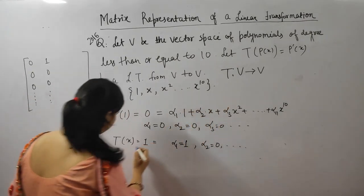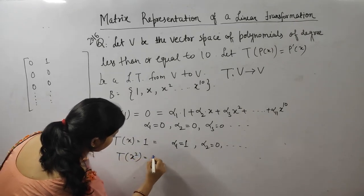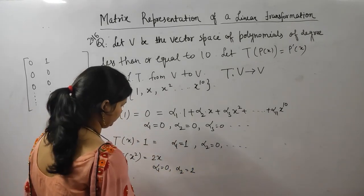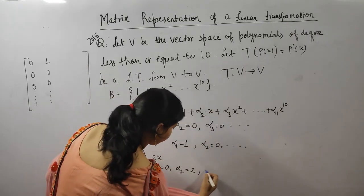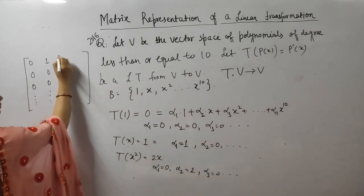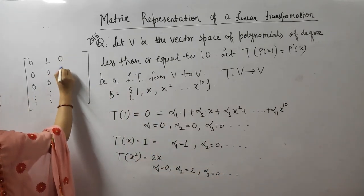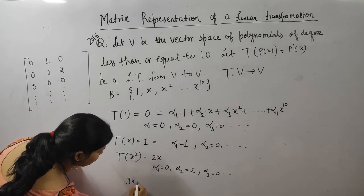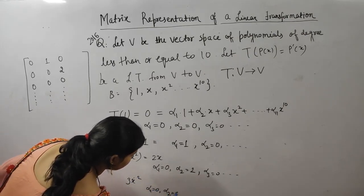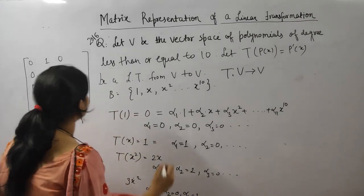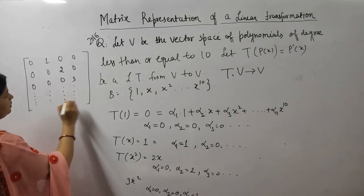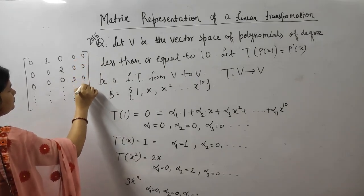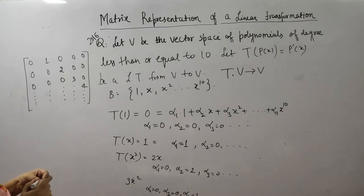Third element: d/dx of x² = 2x, so alpha1 = 0, alpha2 = 2, rest are 0. Column is (0, 2, 0, ...). For x³: d/dx of x³ = 3x², so alpha3 = 3. Column is (0, 0, 3, 0, ...). Next element gives d/dx of x⁴ = 4x³, so the column is (0, 0, 0, 4, ...). Similarly we can find our full matrix from here.